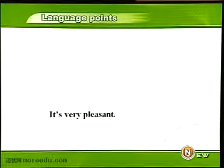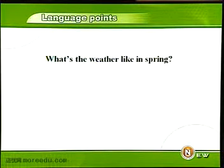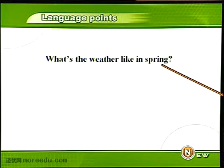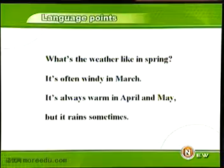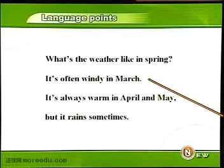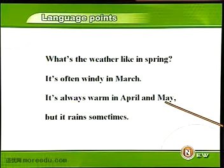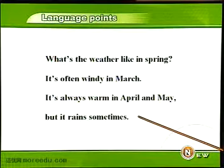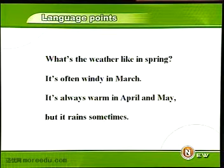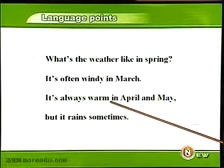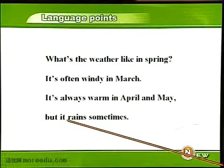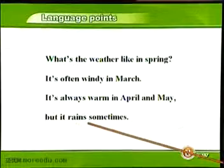Dimitri用这个词来概括希腊的气候特点。那么接下来就让我们具体来看一看，在春夏秋冬四季当中，希腊的气候都是什么样的。What's the weather like in spring? 春天的天气怎么样？In spring，春天。请注意在季节的前面是没有冠词的。春天都包括三月March、四月April和五月May。It's often windy in March，三月份常常刮风。It's always warm in April and May, but it rains sometimes. 请注意在这些句子当中的it指的都是天气，the weather. Windy，多风的；warm，温暖的。在这儿，rain是下雨的意思，由于前面的第三人称单数it，所以在动词rain的后面加了s，it rains sometimes.